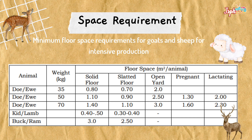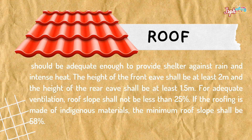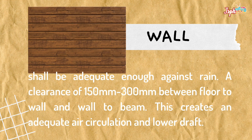This is the space requirements — the minimum floor space requirements for goats and sheep for intensive production. For structural requirements, the roof should be adequate enough to provide shelter against rain and intense heat. The wall shall be adequate enough against rain, with a clearance of 150 mm to 300 mm between floor to wall and wall to beam.